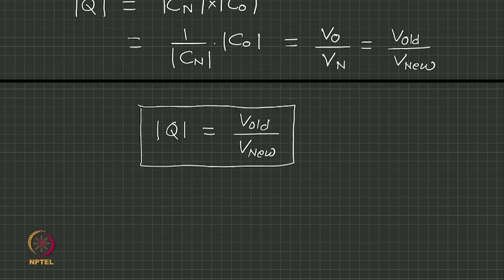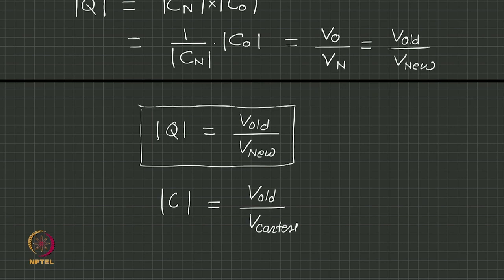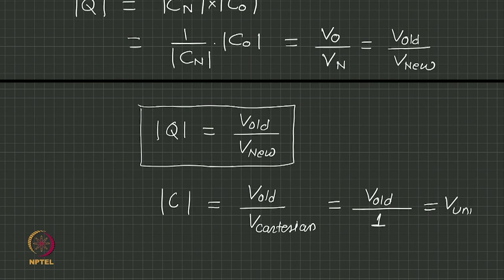So the determinant of any coordinate transformation matrix is just the ratio of the two unit cell volumes — the old volume divided by the new volume. This is an interesting result we will find some use for later. The crystal-to-Cartesian case was special: the new basis is Cartesian, so the volume of the new unit cell is unity (it is a unit cube), which is why the determinant of C came out to be the volume of the original crystal unit cell.